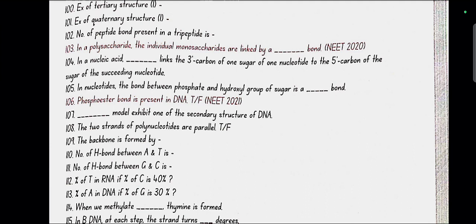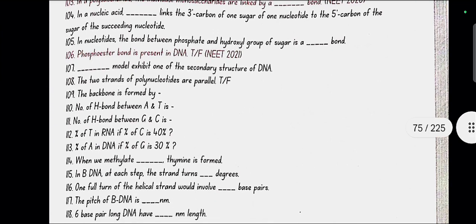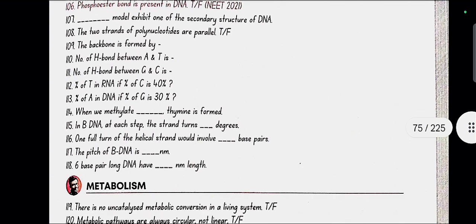Watson-Crick model exhibits one of the secondary structures of DNA. The two strands of polynucleotides are antiparallel. The backbone is formed by sugar phosphate sugar chain. The number of hydrogen bonds between A and T is 2. Number of hydrogen bonds between G and C is 3. Percentage of T in RNA if percentage of C is 40 percent: 0 percent because RNA have uracil instead of thymine.